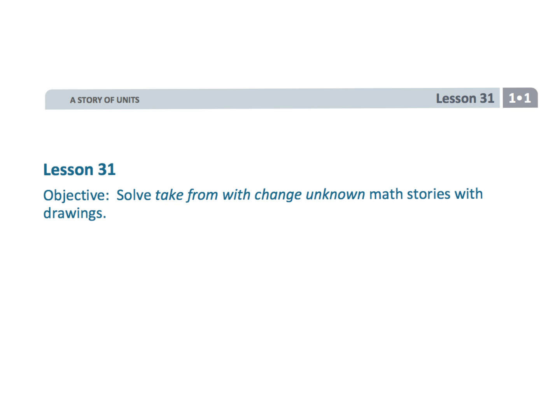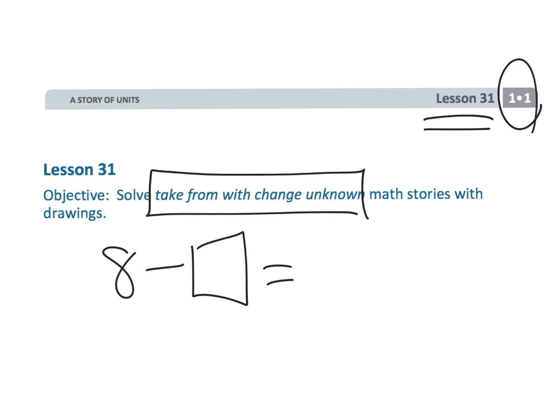And that wraps up first grade module 1 lesson 31 where we are taking from with a change unknown. So that would be 8 minus blank is equal to 5, and we are using subtraction to figure out what that unknown is.